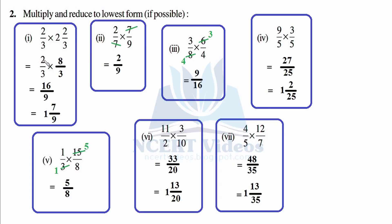8 times 2 is 16 over 3 times 3 is 9. Now it is improper, so we convert: 9 goes into 16 once with remainder 7, giving 1 and 7 over 9. In another part there is a cancellation opportunity — 7 and 7 cancel — so it becomes the proper fraction 2 over 9.